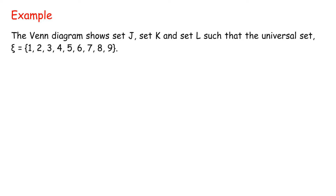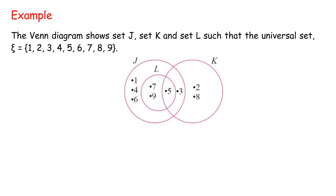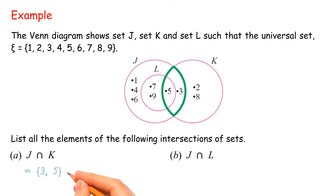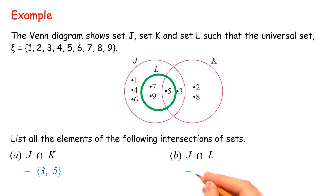Example. The Venn diagram shows set J, set K, and set L such that the universal set equals {1, 2, 3, 4, 5, 6, 7, 8, 9}. List all the elements of the following intersections of sets. Solution. A: J intersect K = {3, 5}. B: J intersect L = {5, 7, 9}.